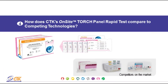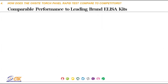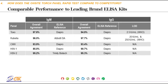How does CTK's On-Site Torch Panel compare to other products on the market? In development, CTK focused on patient outcomes, ease of use, and superior performance. Clinical evaluations were run against market-leading ELISA brands, and the results show the On-Site Torch Panel is comparable to these leading commercial ELISA kits. CTK also ensured the test meets WHO standards for limits of detection for Toxoplasma and Rubella screening.